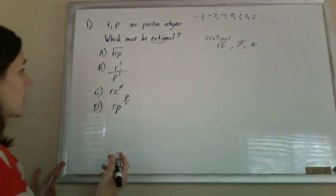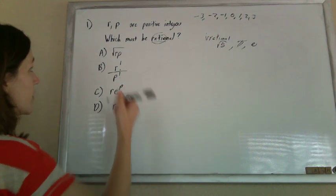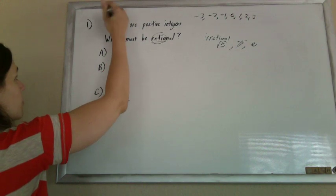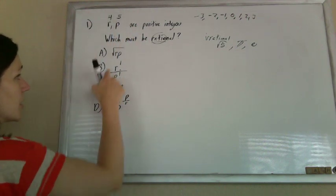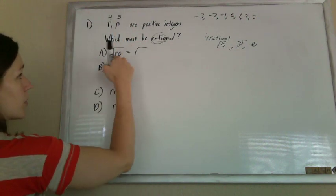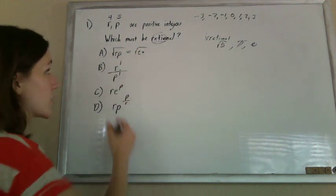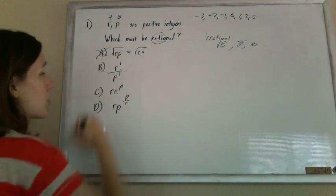So given that, you could even just choose some numbers for R and P. Let's say R was 4 and P was 5, and so if you took the square root of 4 times 5, you get the square root of 20, and that's not pretty, so that's certainly not rational.